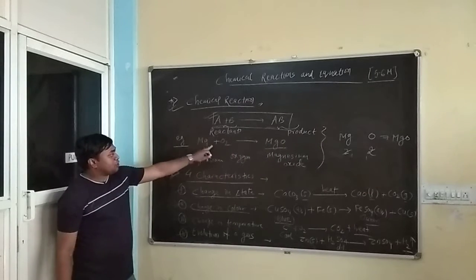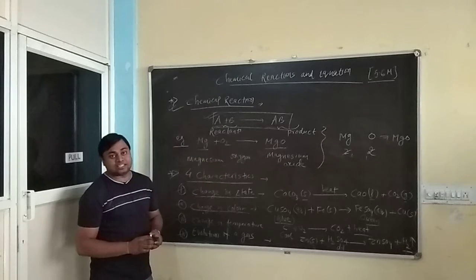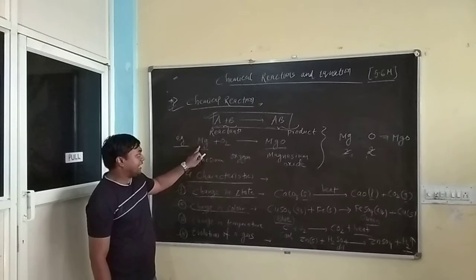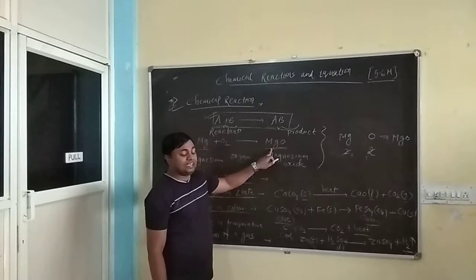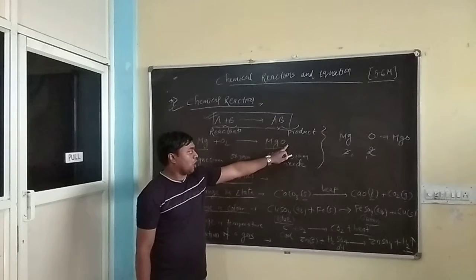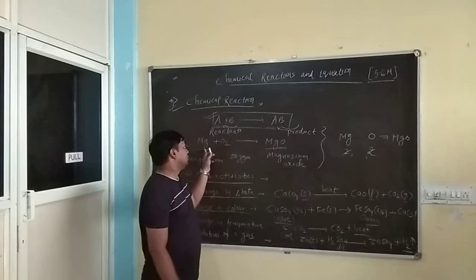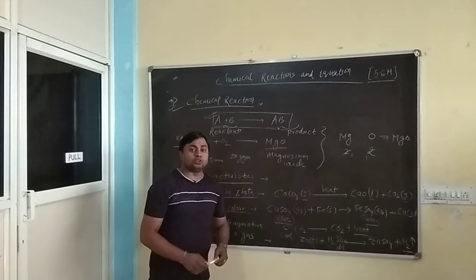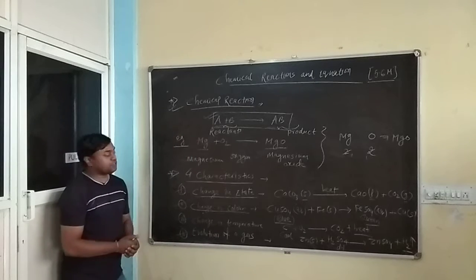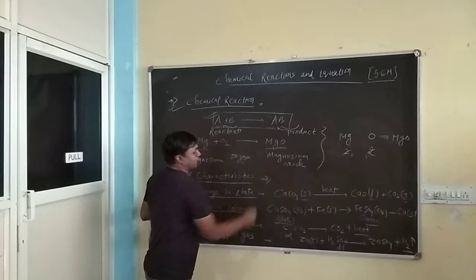So Mg plus O2 gives you MgO. Here we can see that this reaction is not a balanced reaction. How? If you see the number of atoms of magnesium on the left hand side is 1. On the right hand side magnesium is 1. Oxygen is 2. Oxygen varies 1. So the number of atoms on both sides is not equal. So it is an unbalanced reaction. We will see the balance in the next video. Here I am just going to discuss the 4 characteristics of a chemical reaction.